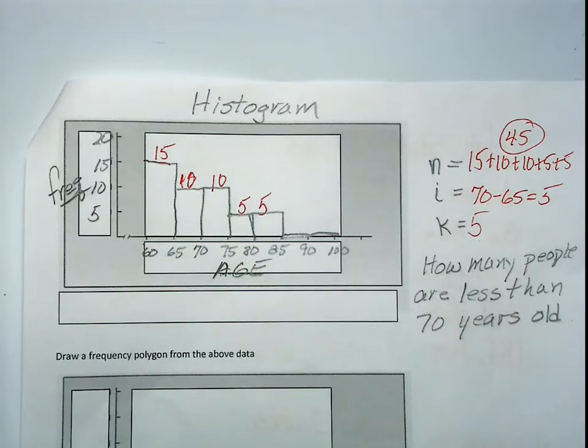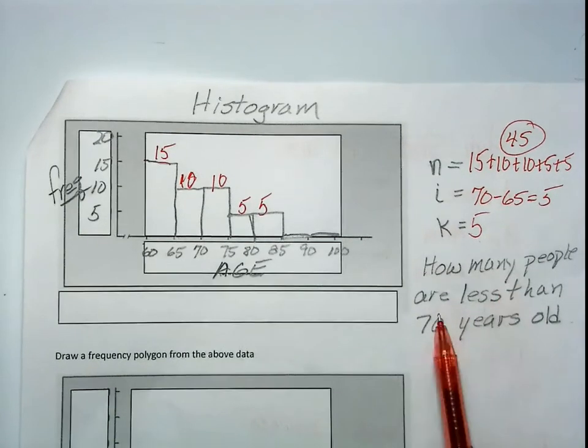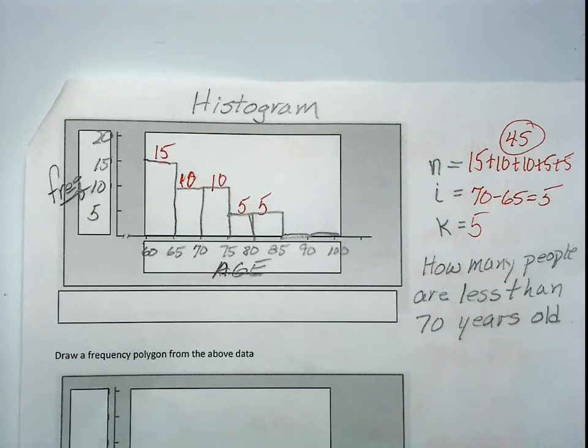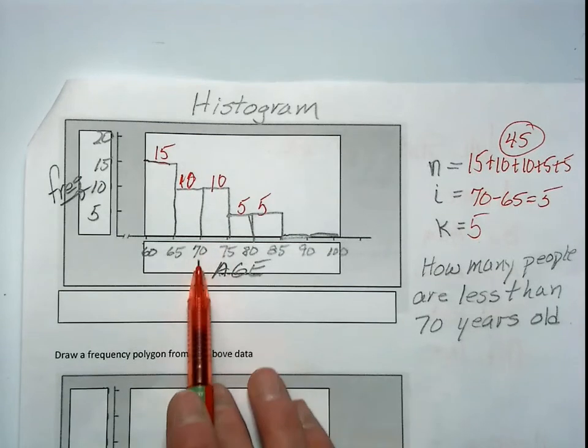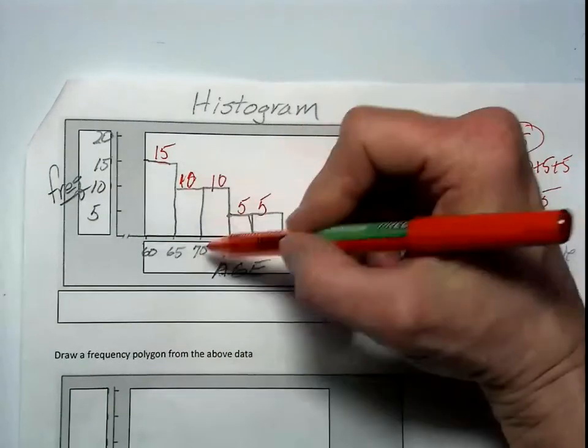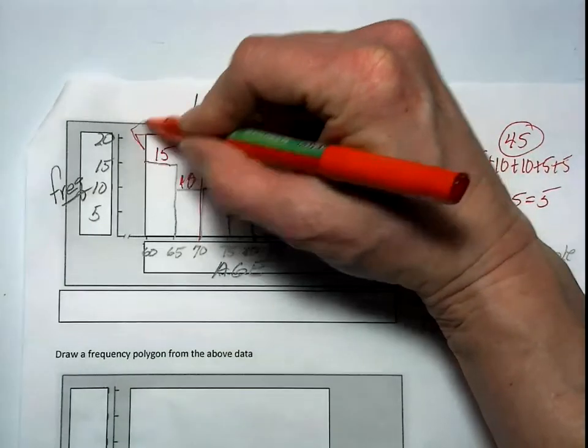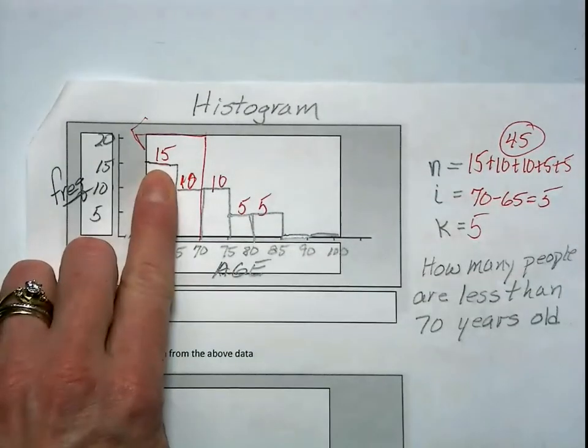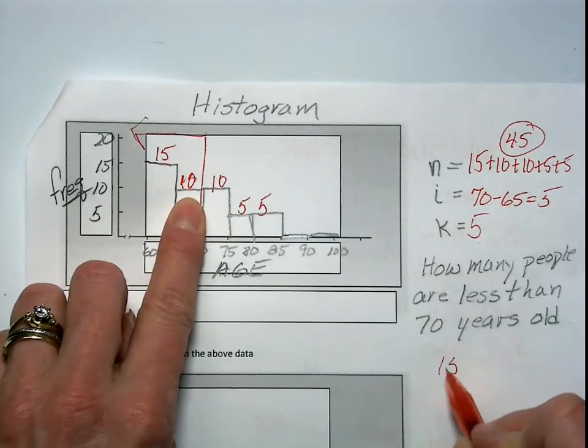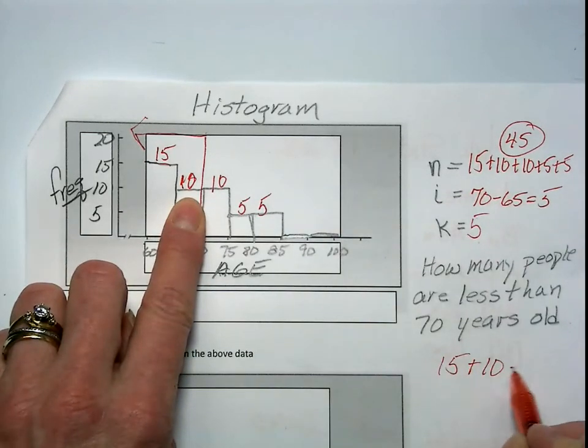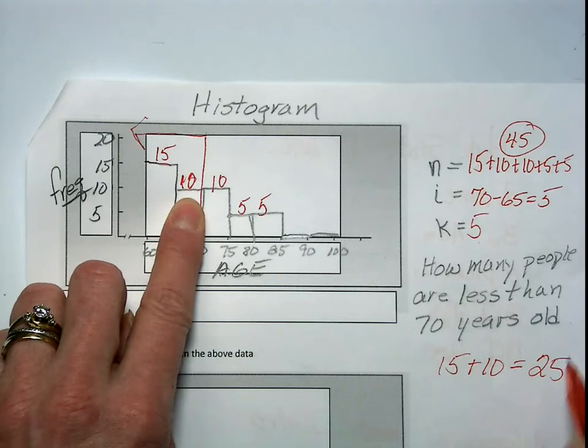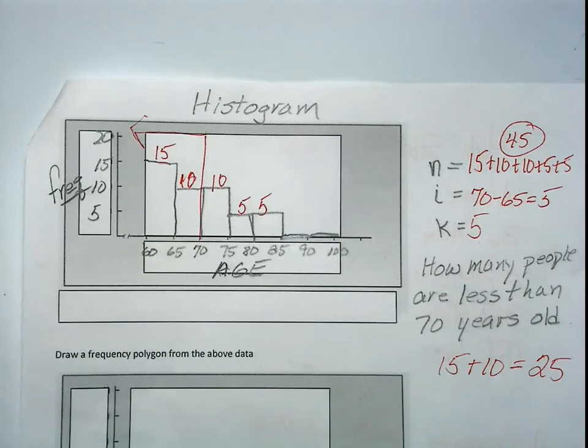Also from a histogram, you can answer many questions. One question I have here is how many people are less than 70 years old? Well, if we look at our data point 70, we want to know how many people are less than 70 years old. All we have to do is add 15 plus 10, or 25 people in our sample are younger than 70 years old.